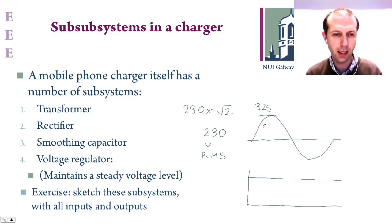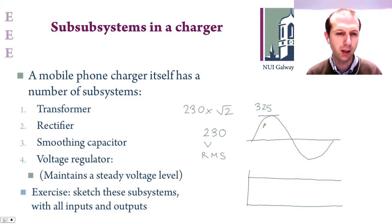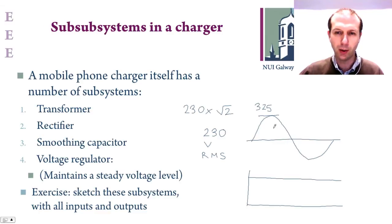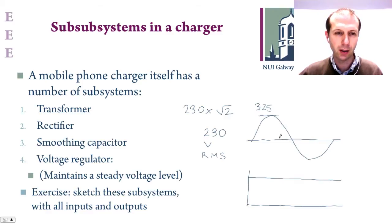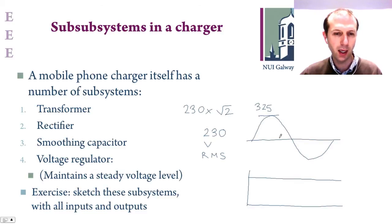A voltage regulator is the last step. If we have a voltage that's around a certain value and changing a little above and below a desired value, we put it through a voltage regulator that maintains it at a steady level. So the series of subsystems is: input AC waveform into the transformer, reduced in size, rectified into a single direction, smoothed by the capacitor, and then through a voltage regulator to create an almost perfect DC output.